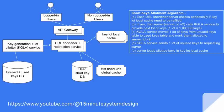The URL shortener service will load all these bunch of keys into the local cache. Whenever a URL shortener server finds that its key-lot local cache needs to be refilled, it will call the KGLA service to ask for the next lot of keys — one lot means one lakh keys. The KGLA service will move those one lakh keys from the unused DB to the used key table, mark them as allotted to that particular server ID, and send those one lakh keys to the requesting server, which loads them into its key-lot local cache.